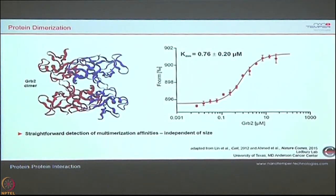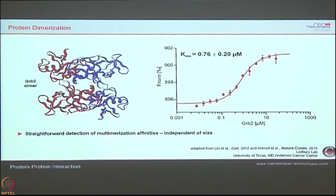Now I will take you to some examples of how this application has been used for different varieties of interactions. One is dimerization: when the same protein interacts with itself, it becomes a dimer. It is extremely difficult in other techniques like SPR or ITC — when you immobilize the same protein and run the same protein through, you get a lot of artifacts. But here, labeling one protein and titrating the same protein, you can determine the dimerization KD. You can clearly see a clean KD fit.